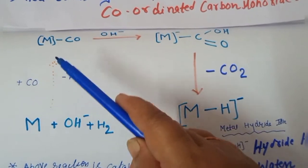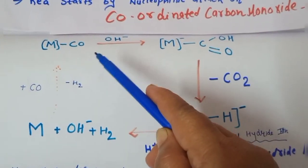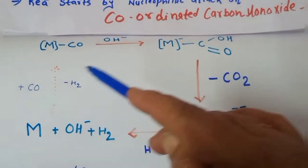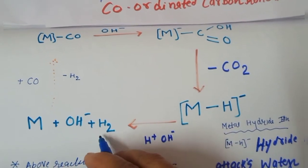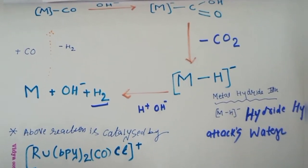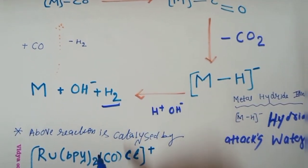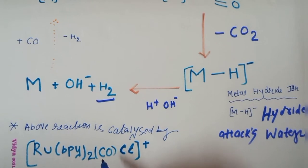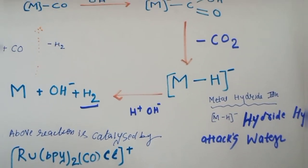This is a very simple reaction. Again this metal will react with other carbon monoxide and can form the complex like coordinated carbon monoxide, and this cycle can further run. This cycle continues and you can get the desired hydrogen as shown in the cycle. Students, this reaction is catalyzed by the ruthenium complex. Here three ligands are used: bipyridine, carbon monoxide carbonyl, and chloride.